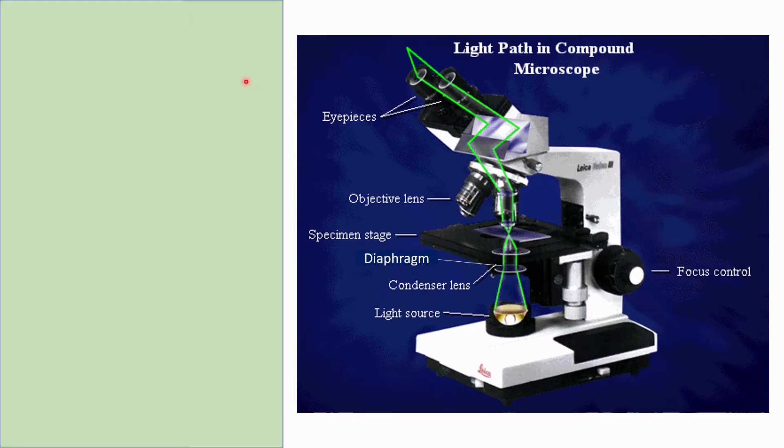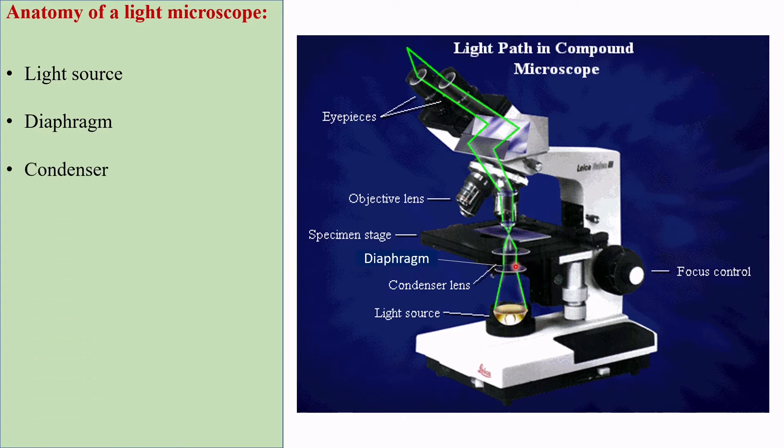Let's start with the basic parts of a light microscope. A light microscope is composed of light source, diaphragm, condenser lens, specimen stage, objective lens, ocular lens or eyepiece, and focus control.